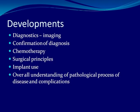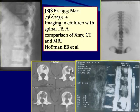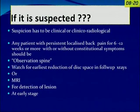This is largely possible because of improvement in diagnostics, confirmation of diagnosis, chemotherapy, surgical principles, implant use, infection management, and overall understanding of the pathological process of disease and complications. We know that 98% is a paradiscal lesion, and before a lesion starts by inflammation, it ends up in a loss of bone height as kyphosis over about 3 to 4 months. If we use that window of opportunity where the patient is symptomatic but doesn't yet show loss of bone height or shows minimal radiological signs, we can diagnose at that stage and treat, achieving healed status without deformity. This is possible if it is suspected clinically or radiologically.